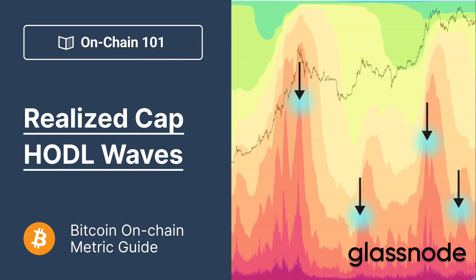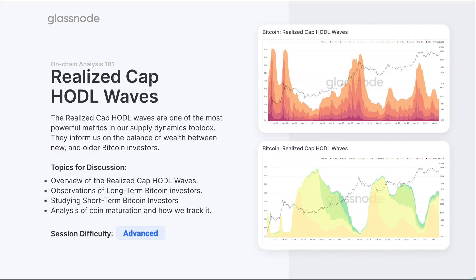Hello everyone and welcome to your Glassnode On-Chain 101 where today we're going to be looking at the Realized Cap HODL Waves. These are a really powerful metric that I put into the Supply Dynamics Toolkit — a tool we can use to see the ownership structure of Bitcoin, how different people whether longer term or shorter term investors are owning those coins, and what's the balance of wealth in the network.